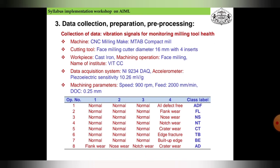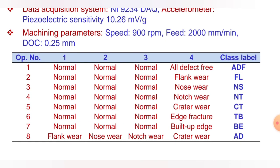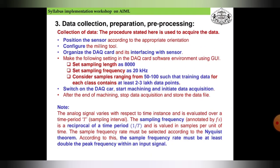The workpiece material is cast iron, and the machine operation is face milling. The data acquisition system is a NI 9234 network module. The accelerometer is an ICP type with electric sensitivity of 10.26 mV/g. Machine parameters are: speed 900 RPM, feed rate 2000 mm/min, and depth of cut 0.25 mm. These are the standard machine specifications used to collect the dataset, as shown in the data table.